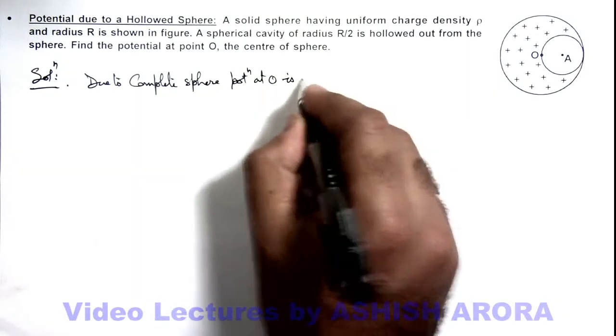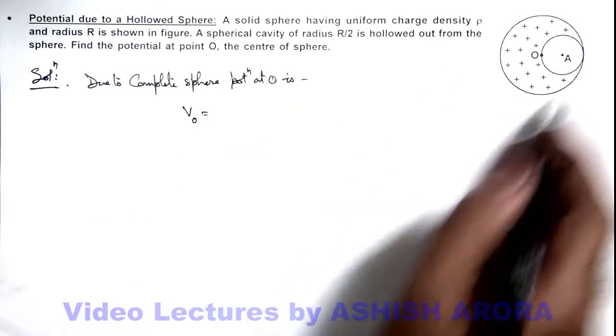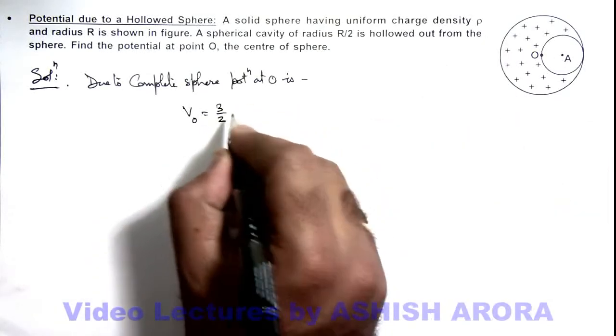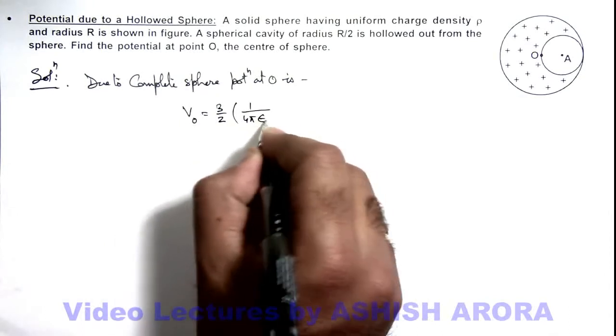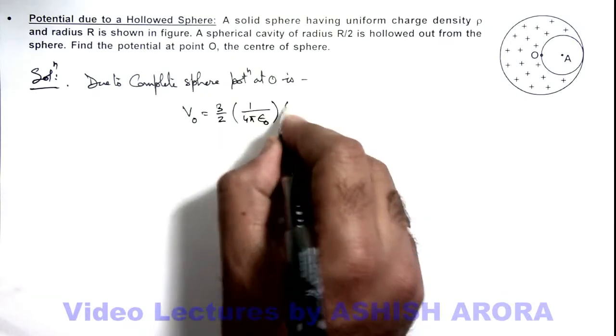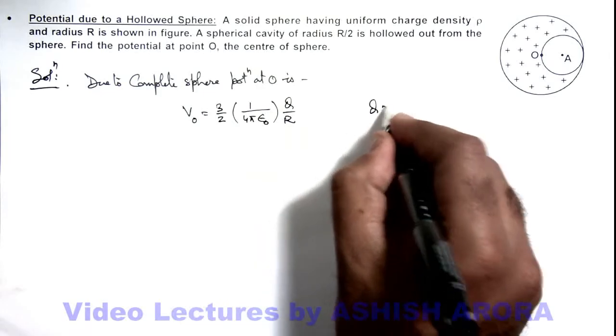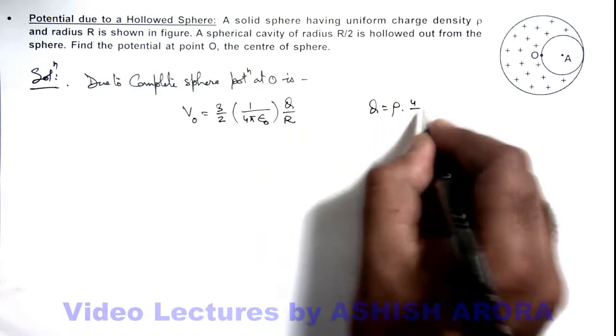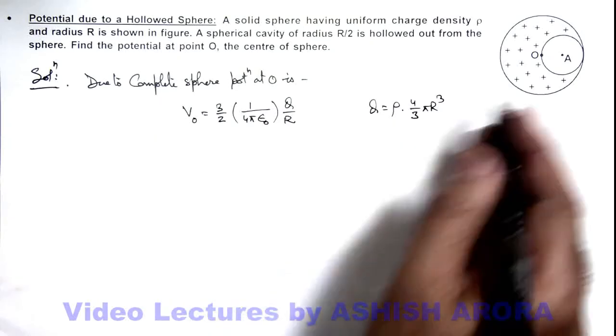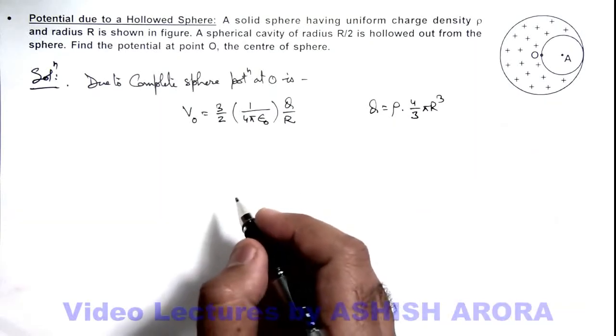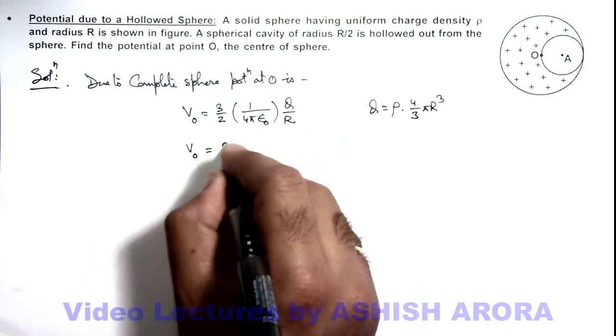This can be given as V₀ = (3/2) × (1/4πε₀) × (Q/R). And the value of Q here can be written as ρ × (4/3)πR³, as ρ is the volume charge density. So in this situation, if we substitute the value of charge, the value of potential at center is given by...